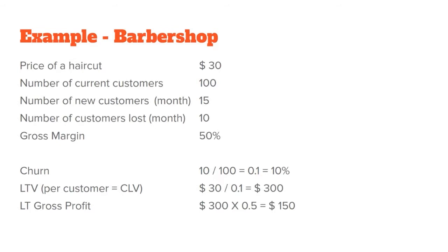In the case of our barbershop, we calculate lifetime value by taking the average price ($30) and dividing it by the churn rate (0.1). So 30 ÷ 0.1 = $300 lifetime value. This is not the money a customer pays each visit, but the total amount they'll pay as long as they do business with you. On average from our current figures, each customer is worth about $300.